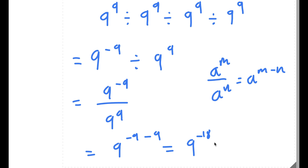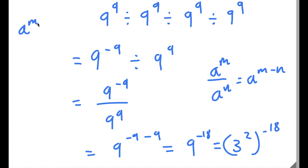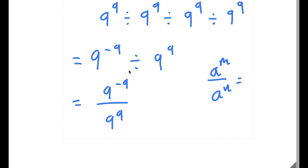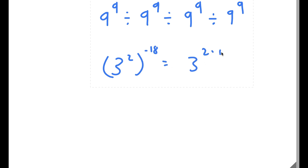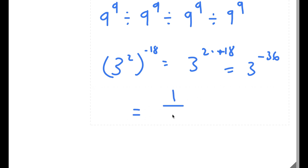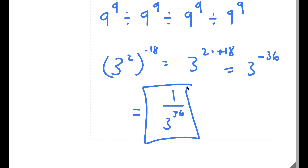9 to the power of negative 18 — well, 9 is the same thing as 3 squared, so I have 3 squared to the power of negative 18. Using the rule a to the power of m to the power of n equals a to the power of m times n, I get 3 to the power of 2 times negative 18. Since 2 times negative 18 is negative 36, I have 3 to the power of negative 36, which equals 1 over 3 to the power of positive 36. This is my answer.